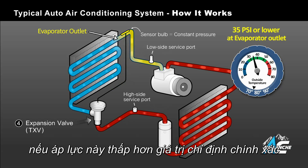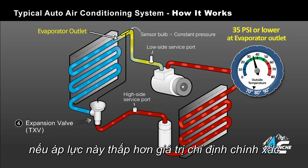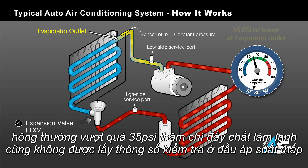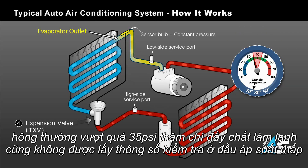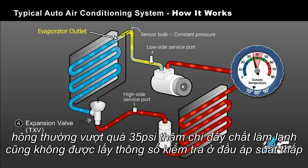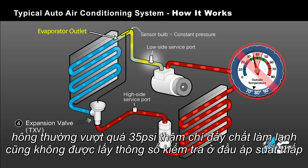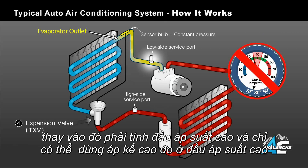If this pressure level is below the gauge's established correct fill, which is typically over 35 psi, even though the system is fully charged, adding additional refrigerant will not show on the low side pressure gauge.